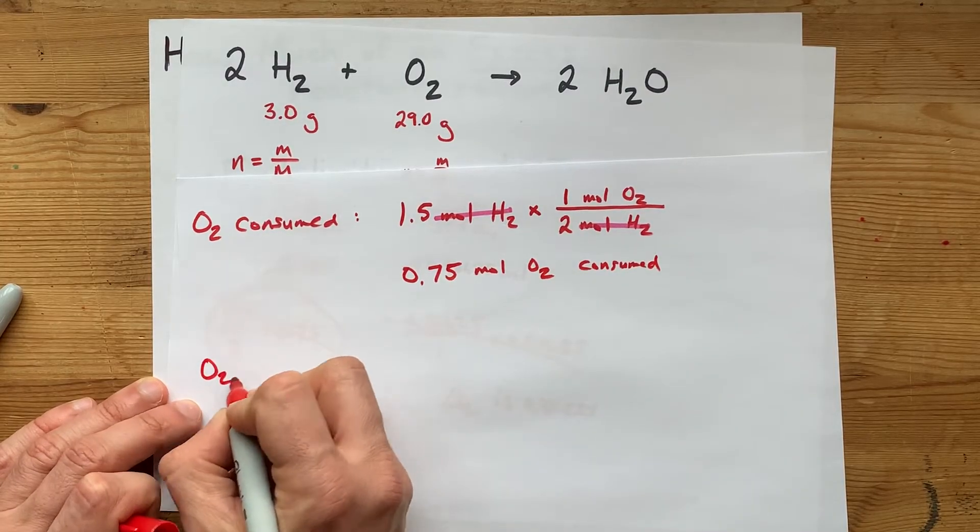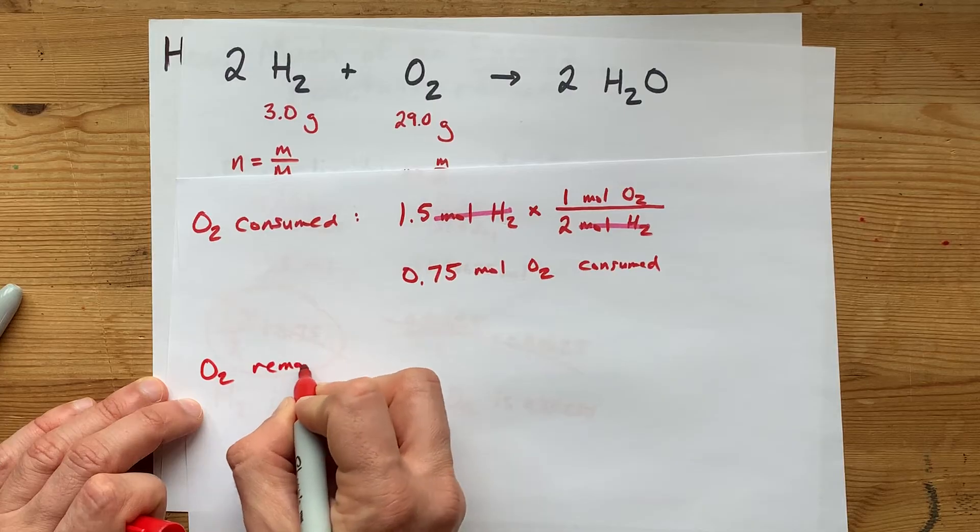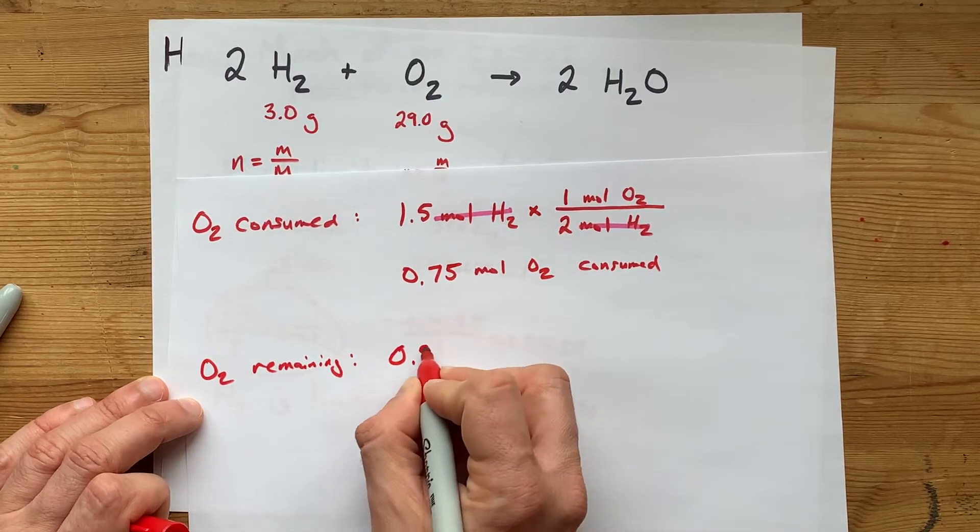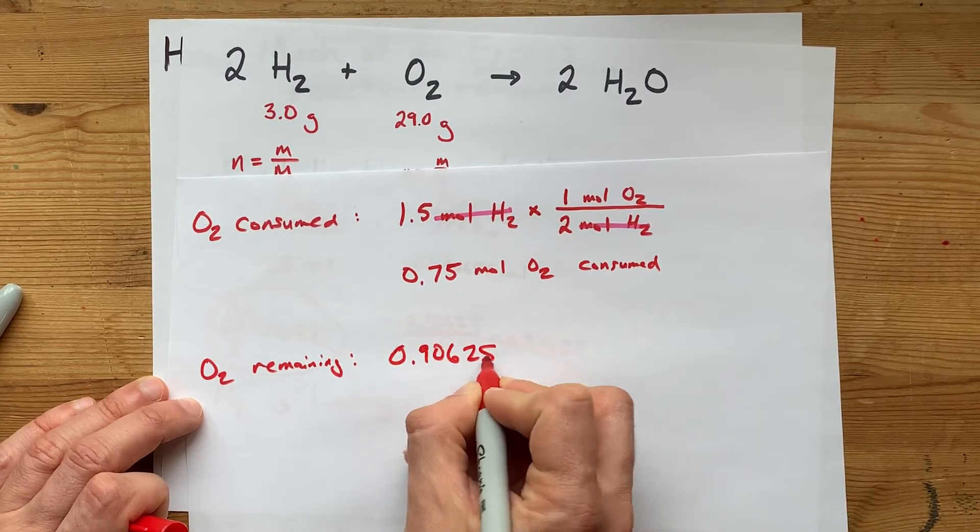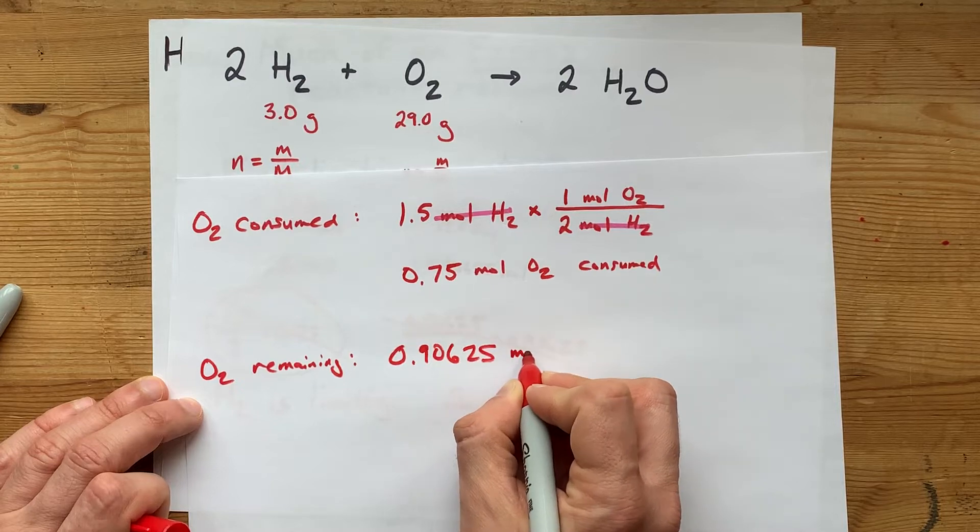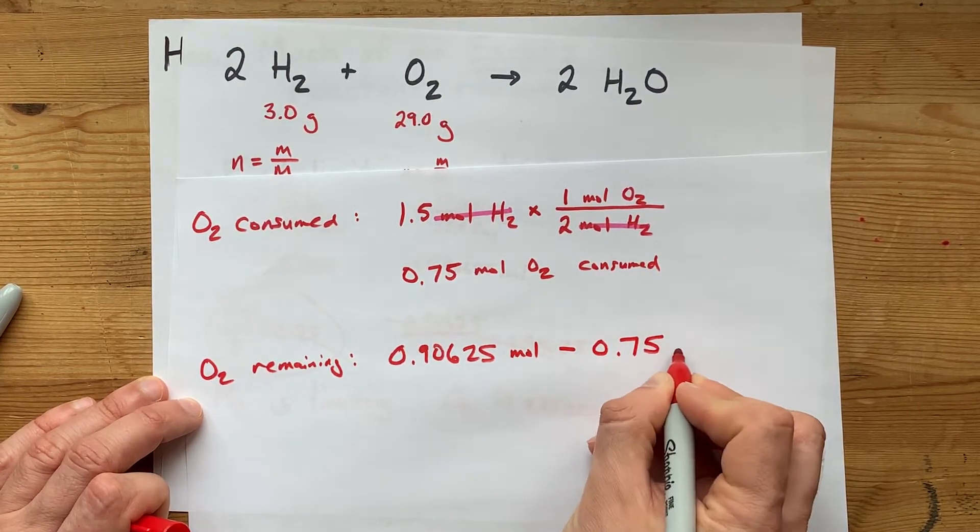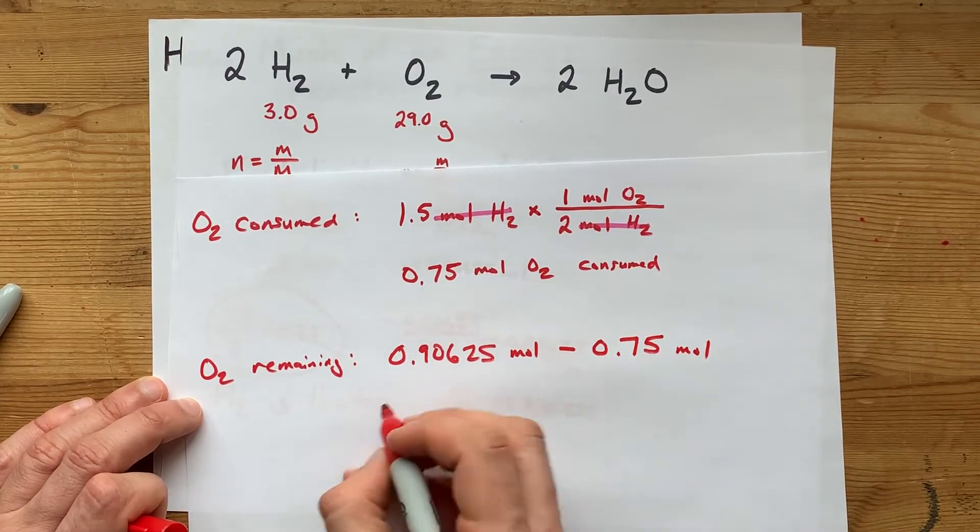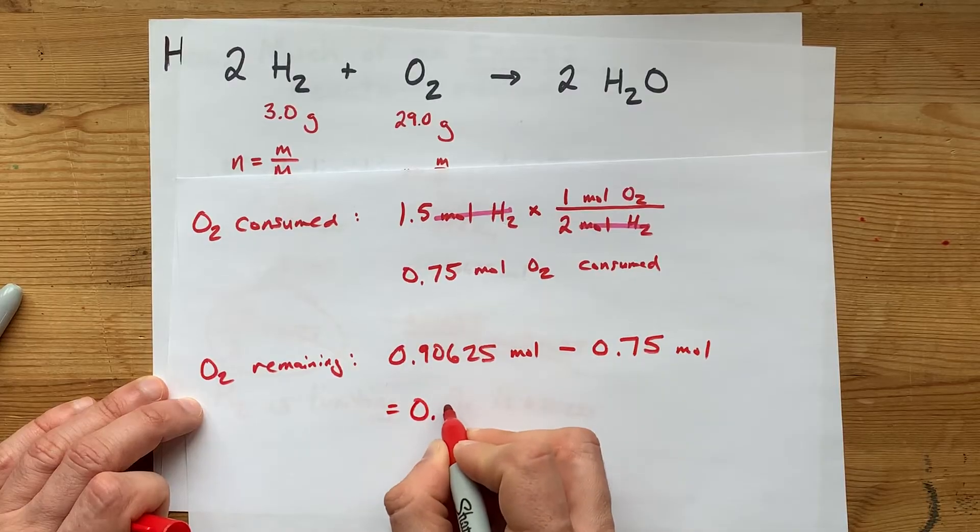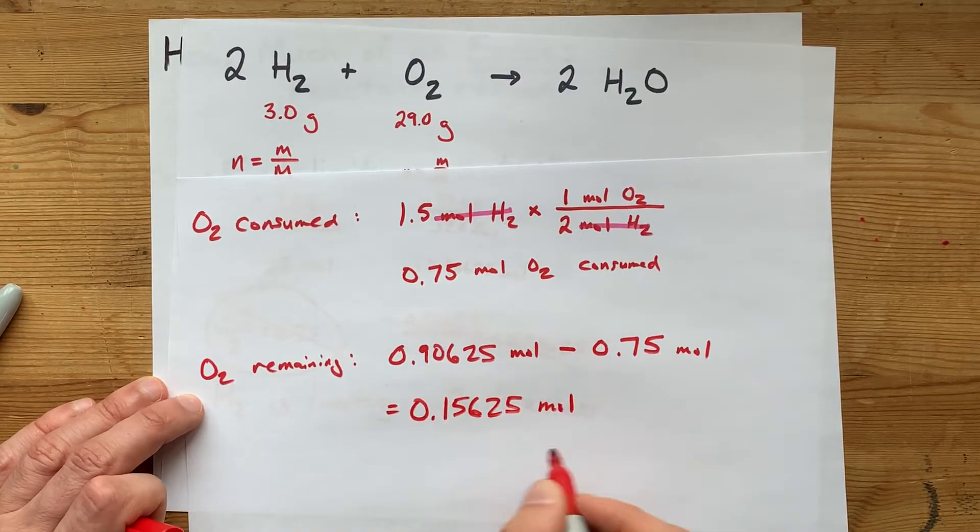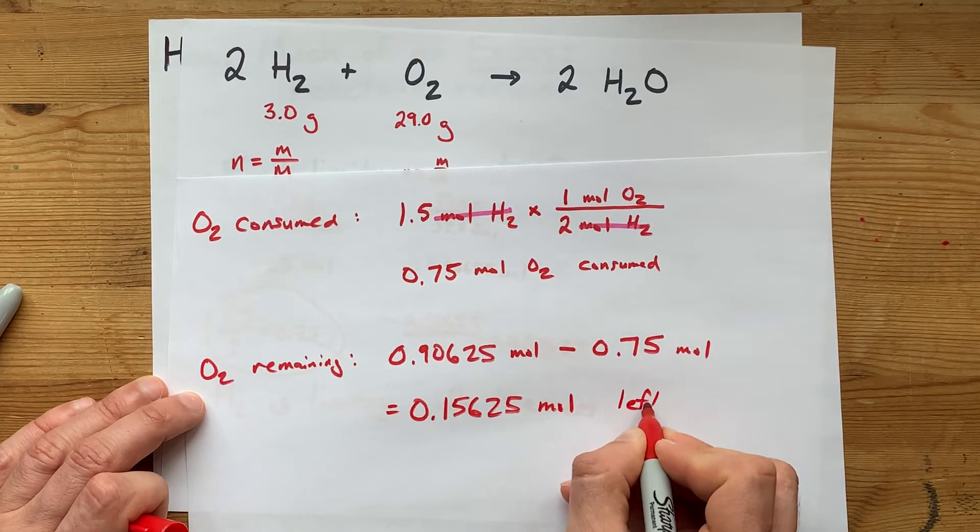Now, the O2 that is remaining after the end of the reaction is the starting amount, 0.90625 moles, less the amount that you actually used. When you do that calculation, you get 0.15625 moles and that's how much is left over.